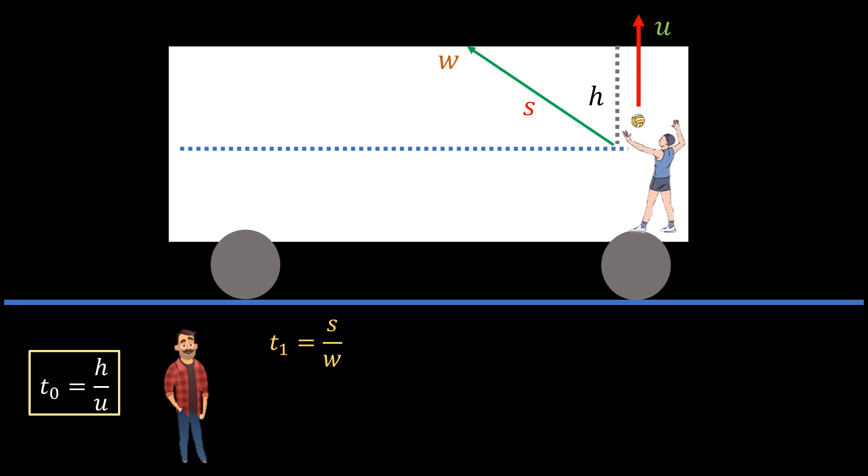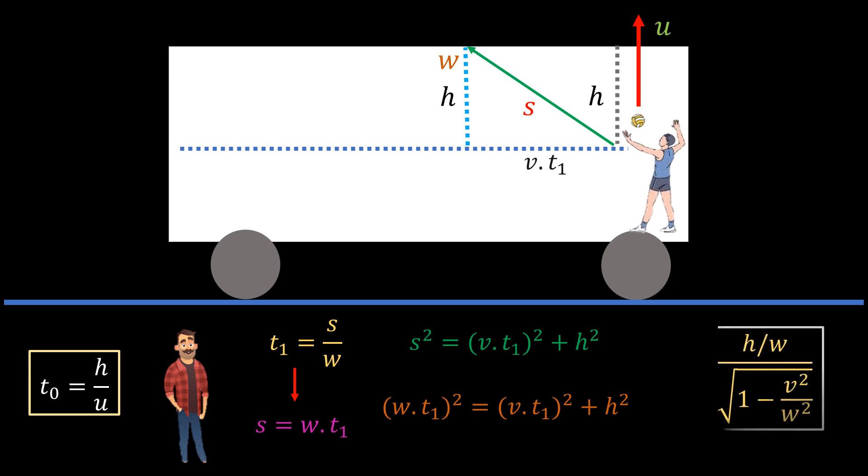Look at the diagram. By the time the ball hits the top of the bus, travelling the height h, it would have also moved a horizontal distance v times t1. So by Pythagoras, we have s squared equal to v times t1 squared plus h squared. But s is also equal to w times t1. So this equation can also be written as follows. Making t1 the subject of the formula yields this. You can pause the video here and try to derive it to confirm.